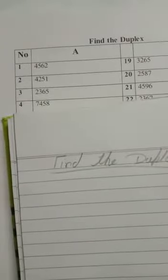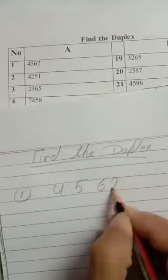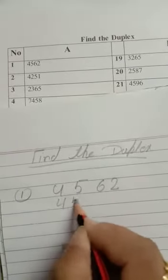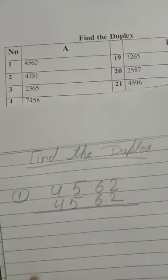Question number 1, so 4, 5, 6, then 4, 5, 6. Duplex that means we have to do double.